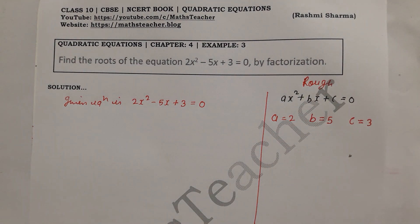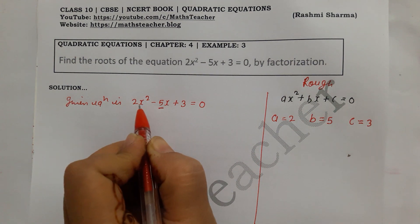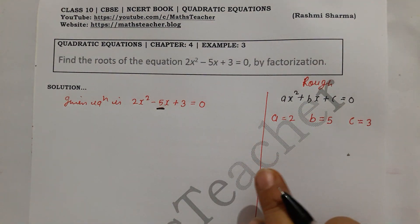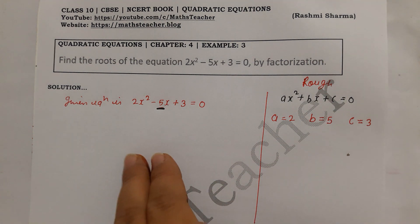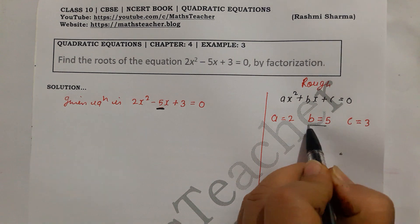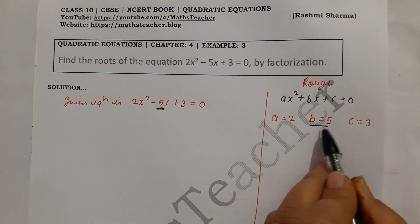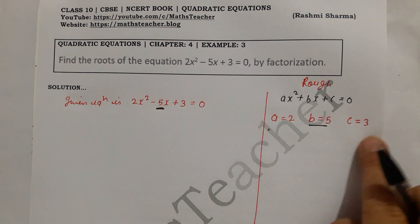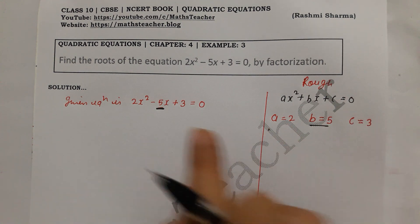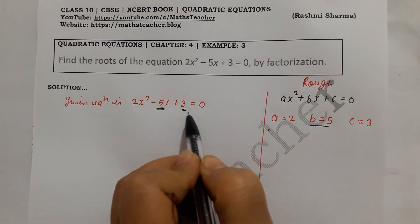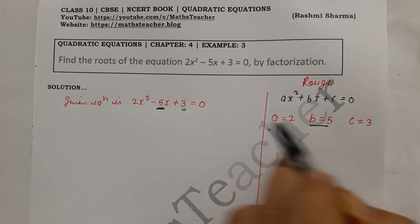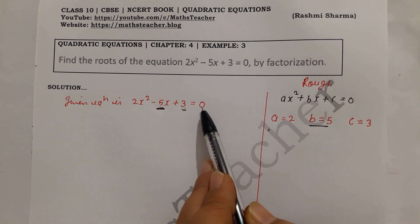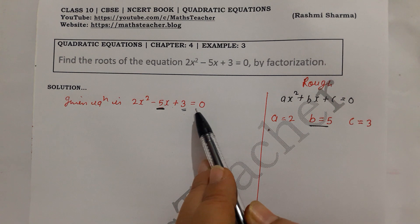First, write the coefficients. Now we have to split the middle term — that is, split 5. We need to write two numbers such that their sum equals b, which is 5, and their product equals a times c, that is 3 times 2, which is 6. Note on signs: if the sign is plus, the number is plus; if the sign is minus, the number is minus.